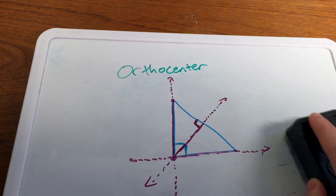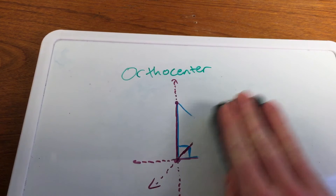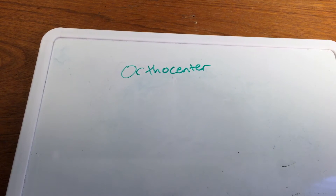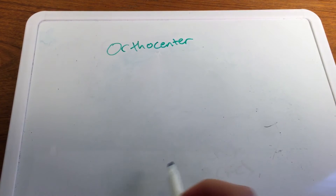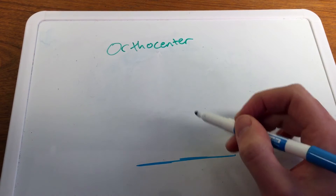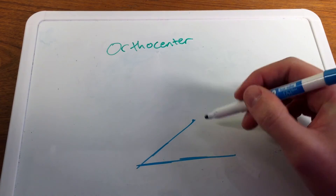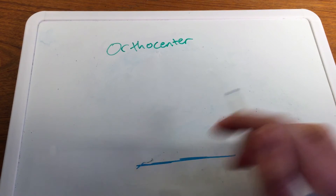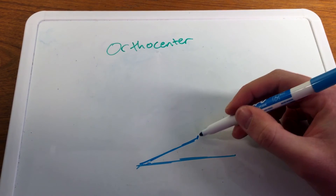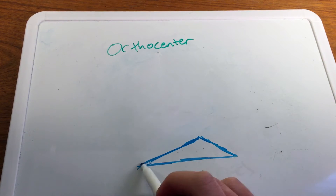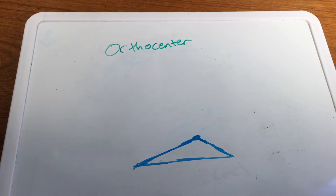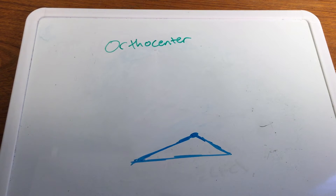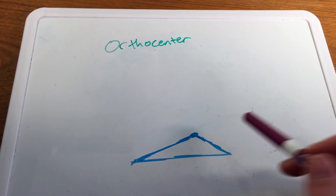Now lastly, with an obtuse triangle — and this is the one that students always have a hard time with — I'm not going to make my triangle super obtuse, because the more obtuse you make your triangle, the farther away that orthocenter will be. I'm going to try to draw it here. We have an obtuse triangle, and it's just a little bit over the right angle. We can see that it's bigger than a right angle.